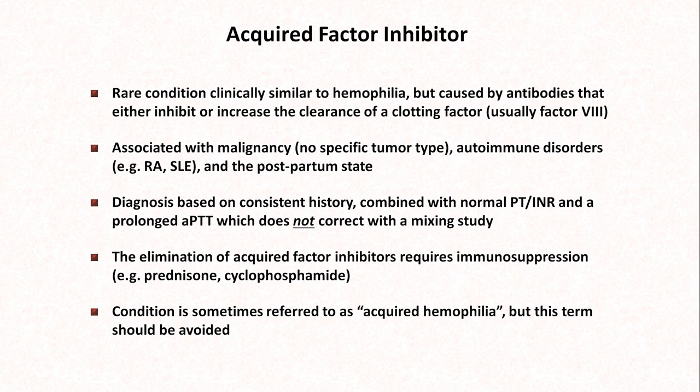Although an acquired factor inhibitor is sometimes referred to as acquired hemophilia, this term should be avoided to prevent affected patients being erroneously labeled as having true hemophilia, as these have significantly different treatments. Additionally, anti-factor antibodies can also occur in patients with true hemophilia who have been treated with factor replacement.